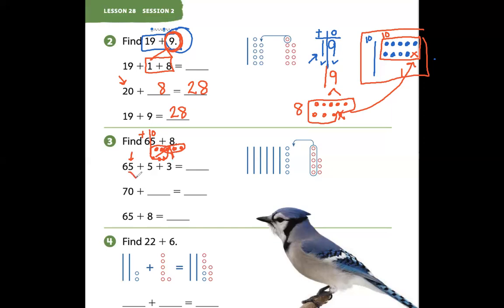So 65 and 5 make what? 70. And 3 more ones, 70 plus 3 equals 73. So 65 plus 5 plus 3 is also 73. So 65 plus 8 is also 73.